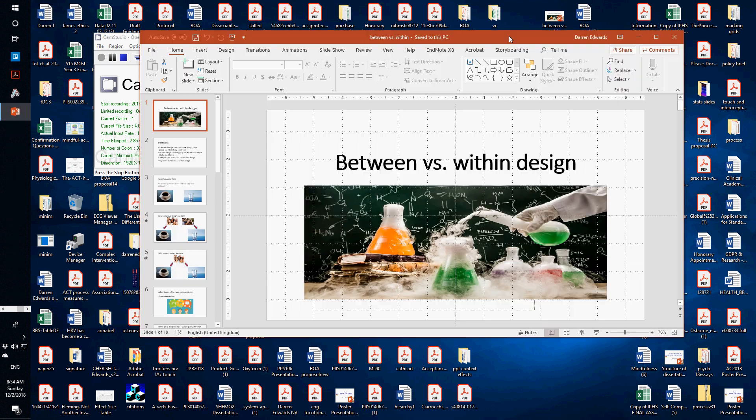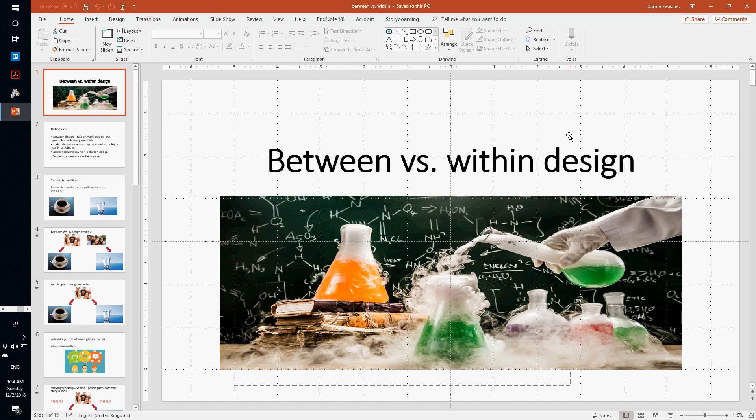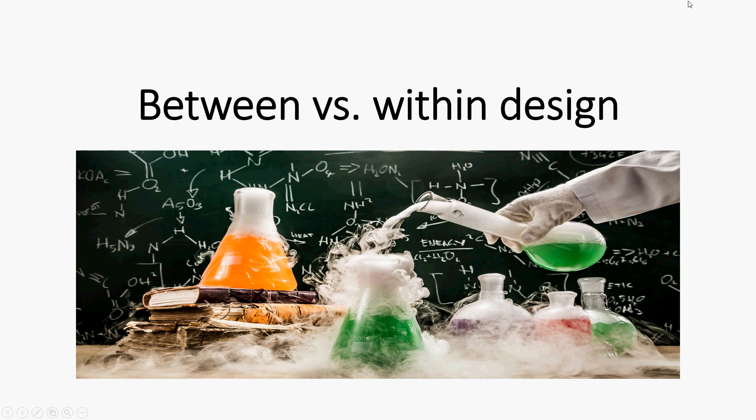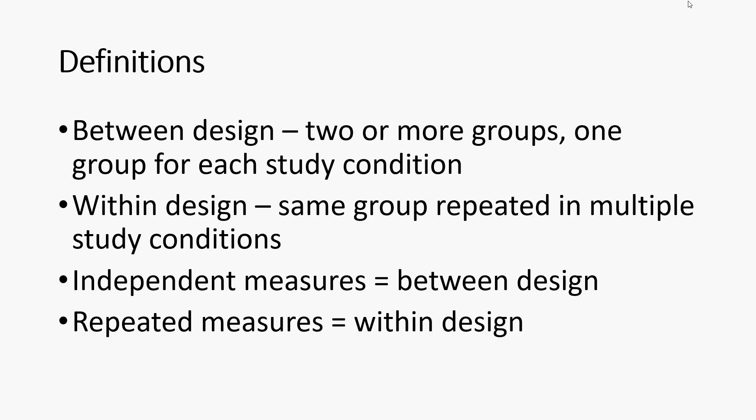This is a simple overview of what a between versus within design is. A between design is where you've got two or more groups and each group is allocated to a unique study condition. A within groups design is where you've got the same group who are tested over multiple study conditions.